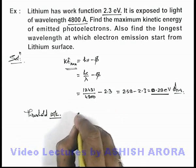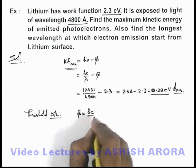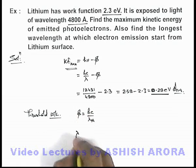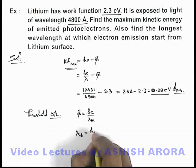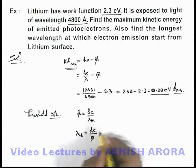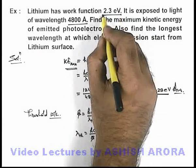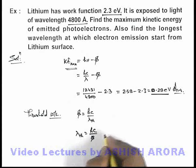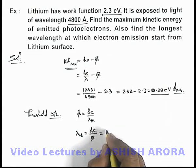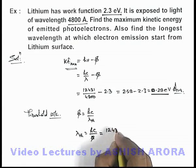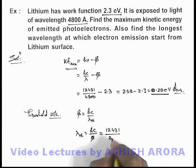In this situation, we know that work function is given as hc by lambda threshold, so lambda threshold is given as hc by phi. The work function we are already given in electron volts, so wavelength in angstroms can directly be calculated as 12431 by 2.3.